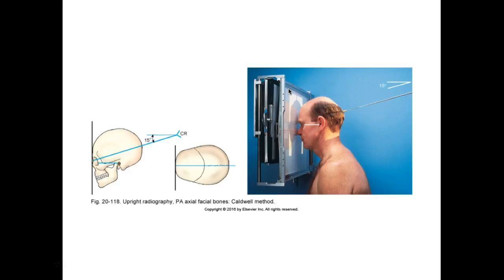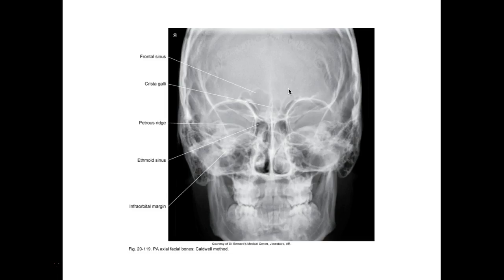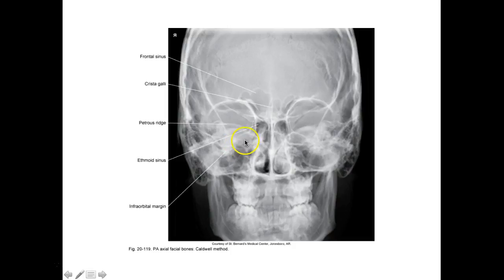You're going to angle 15 degrees caudal to the OML, exiting the nasion. Evaluation criteria: the petrous ridges are projected into the lower one-third of the orbits, no rotation, and optimal exposure. Labeling includes frontal sinus, crista galli, petrous ridge in the lower one-third, ethmoid sinuses on either side, and the infraorbital margin. The exaggerated Caldwell throws the petrous ridges further down so you can see the infraorbital margin.